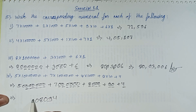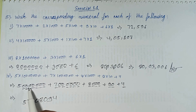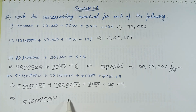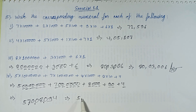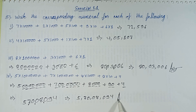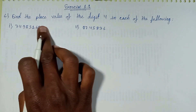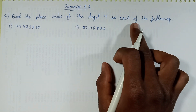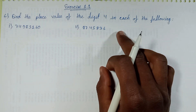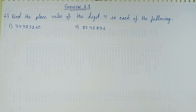The number 5,70,08,094 has eight digits. Separating by comma — first three digits, then two digits each — gives 5,70,08,094. This is my answer. Next is question number 6 of Exercise 1.1: Find the place value of the digit 4 in each of the following. This question will be solved in the next episode. Wait for the upcoming notification. Thanks for watching.